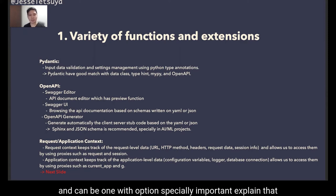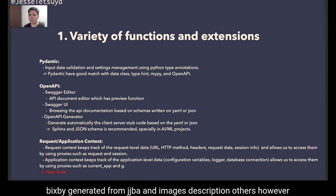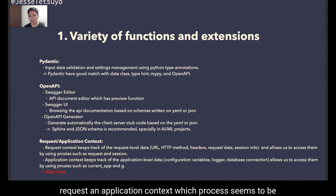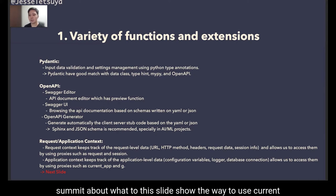In AI/ML projects, data scientists and ML engineers have accountability to stakeholders for data, so document flexibility and maintainability are critically important. Sphinx offers flexibility to generate documents from JSON Schema and to add images and descriptions. So Pydantic and OpenAPI could be replaceable with others. However, Flask's request and application context seem to be unique compared to other frameworks. These are memory spaces for framework computing of global variables such as current_app, g, request, and session.